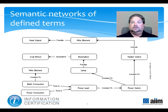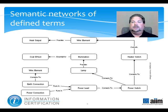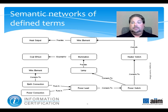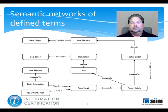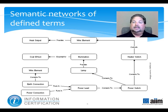Semantic networks are functionally similar to thesauri but operate on a higher conceptual plane. Continuing with our salad example, a semantic network-based system would understand that content about mesclun greens, endive, and radicchio has something in common with content about lettuce, and it would use a metadata-based infrastructure to unlock these particular secrets. Here in this diagram is an example that relates the various terms having to do with an electric lamp, connecting terms like power and heat to illumination.